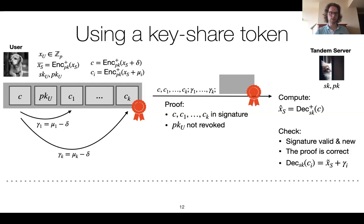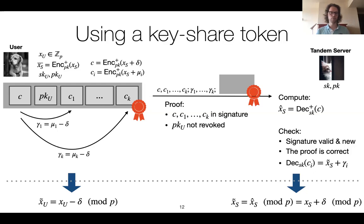Finally, the user and the tandem server construct fresh key shares for use in the protocol. The user takes its long-term key share XU and subtracts delta, whereas the server takes XS-hat modulo p, which works out to XS plus delta. Adding these two together, the deltas cancel out, giving a proper re-randomization of the secret shares. By the linear randomization property of the threshold cryptographic protocol, everything works out correctly.